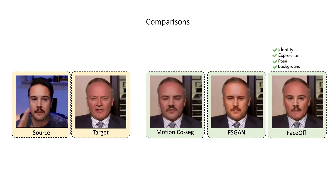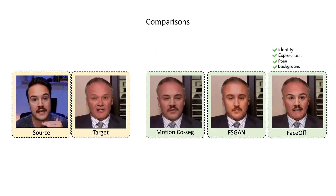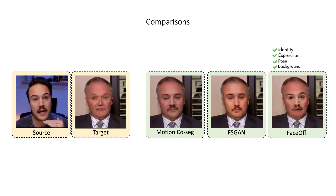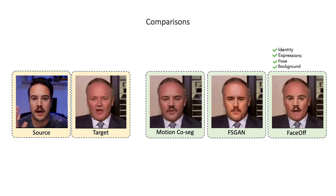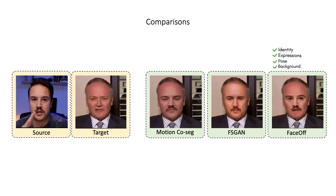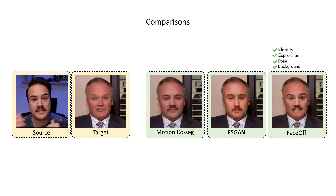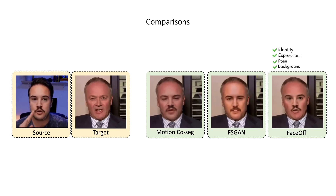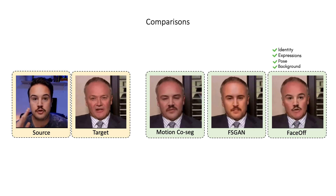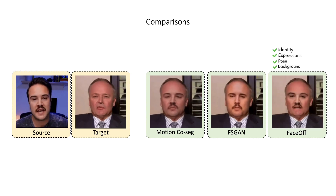Now we show comparisons with state-of-the-art face swapping models. As can be seen, Face Off swaps the identity better than the other two models. It also perfectly swaps the source expressions, whereas the other models do not swap expressions — target or source — exactly.